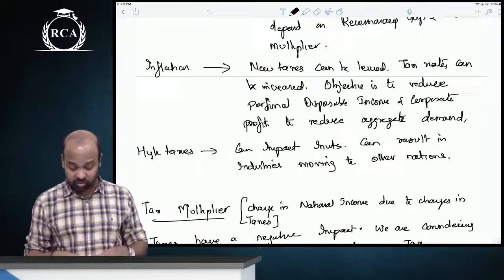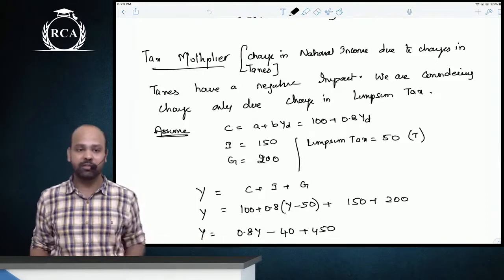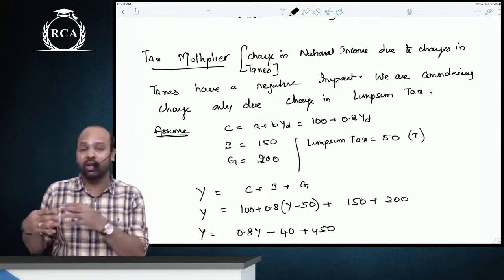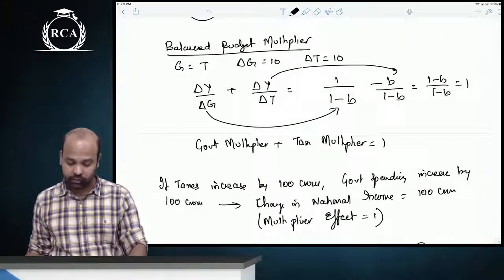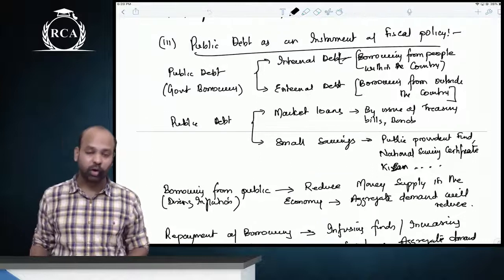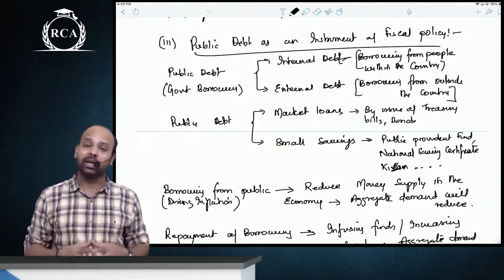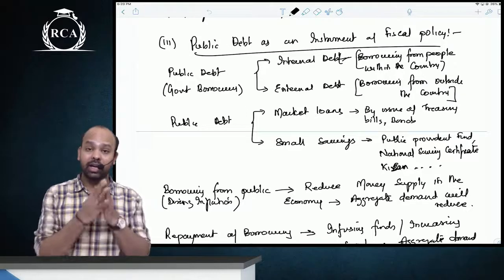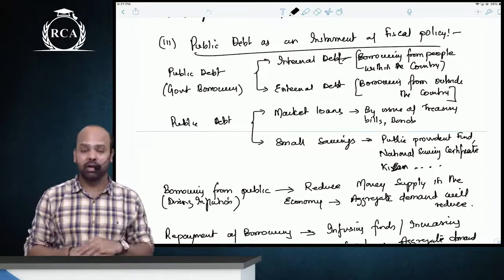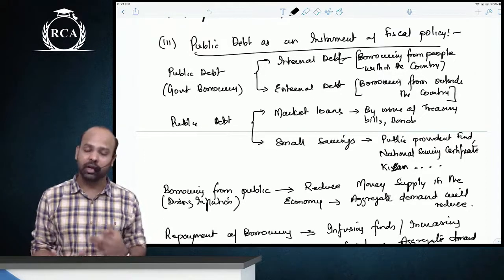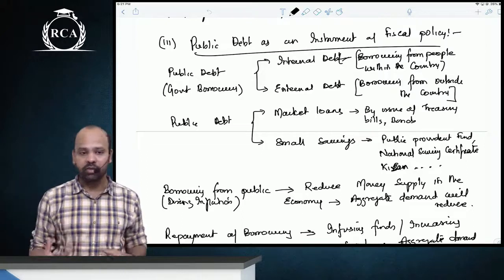Very high taxes can result in businesses moving out. The tax multiplier is −b divided by (1 − b). A balanced budget multiplier — where the increase in government spending equals the increase in taxes — will always equal 1. Regarding public debt as an instrument of fiscal policy, debt can be internal or external. When the government borrows from the market, it reduces money supply and liquidity, negatively impacting aggregate demand. When the government repays debt, it increases money supply and in turn increases aggregate demand.